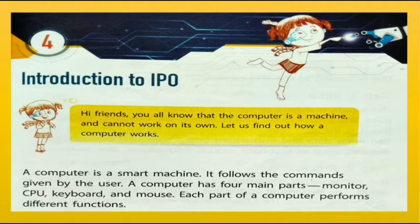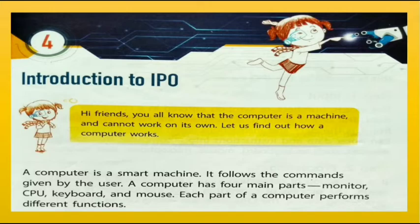Hi friends, we all know that the computer is a machine and cannot work on its own. Let us find out how a computer works. A computer is a smart machine — it follows the commands given by the user. A computer has four main parts: monitor, CPU, keyboard, and mouse. Each part of a computer performs different functions.